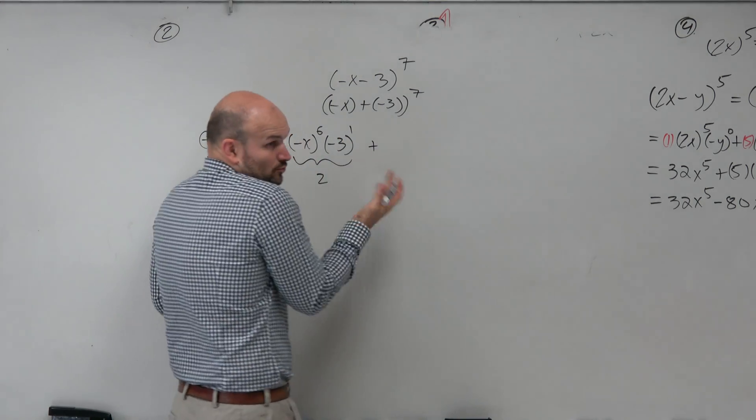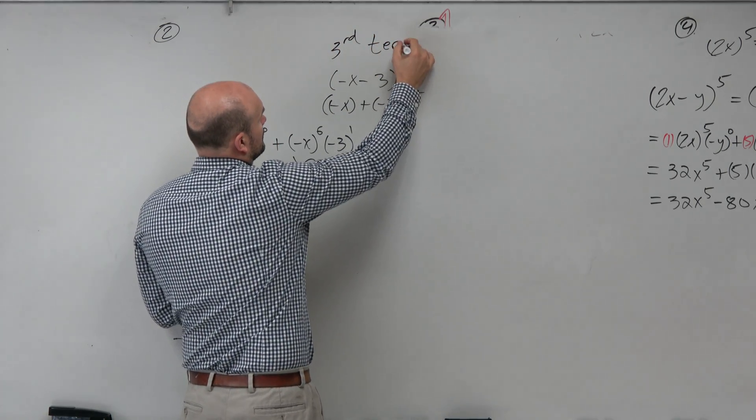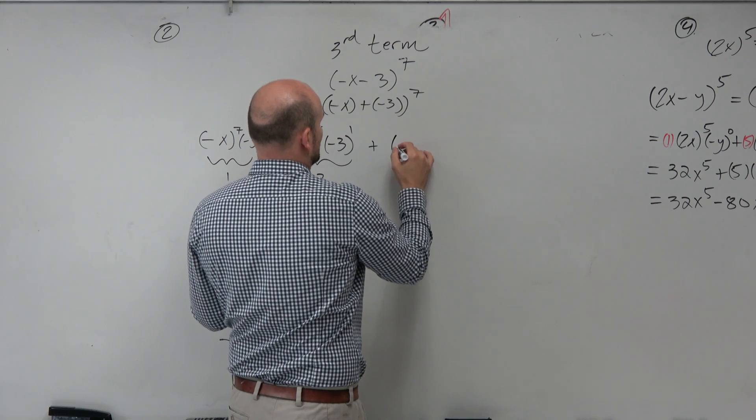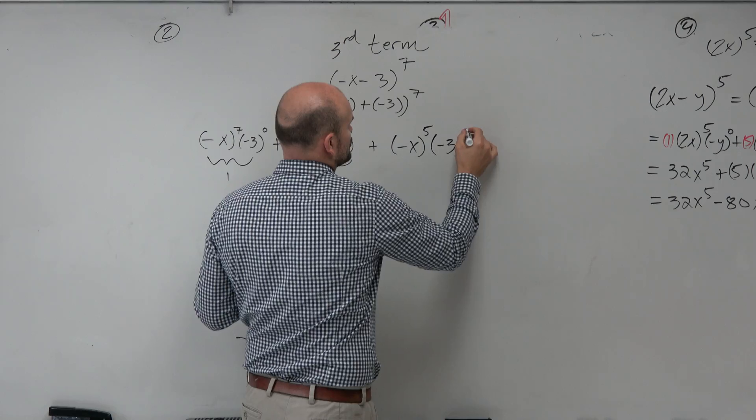And then the third term, which we're looking for, is going to be negative x to the 5th and negative 3 squared.